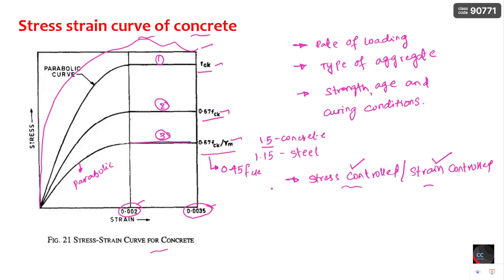For example, if you take a mild steel specimen and apply stress in constant increments — 0, 0.5, 1, 1.5 Newton per mm squared — and measure the resulting strain, that is the stress control test. I hope you understand the difference between stress control test and strain control test.